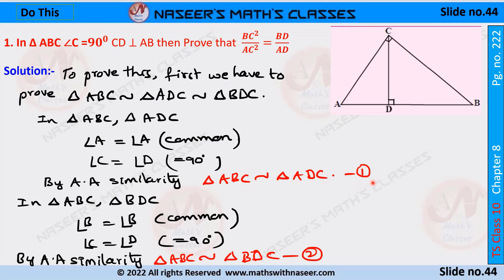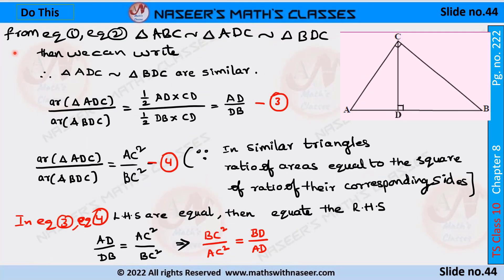Next we take triangle ABC and triangle BDC. In these two triangles angle B is common, and angle C equals 90 degrees, and angle D equals 90 degrees. By angle-angle similarity, triangle ABC is similar to triangle BDC. Let this be equation 2. From equations 1 and 2, triangle ABC is similar to triangle ADC, which is similar to triangle BDC.